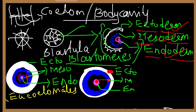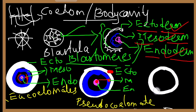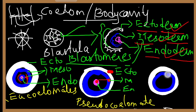This type — where the space is present between the mesoderm and the endoderm — is called pseudocoelomates. Organisms with this arrangement are called pseudocoelomates. The last type has an absence of coelom — there is no space between the derms.